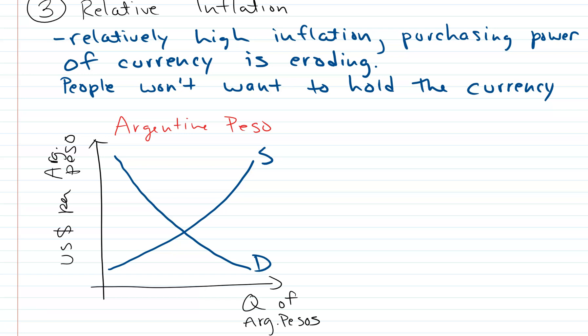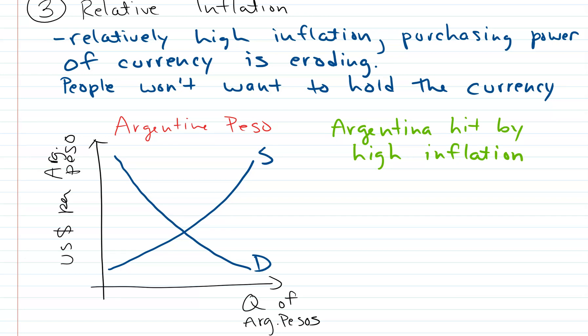We have people who want to buy Argentine pesos with dollars — that's the demand — and people who want to sell pesos to get dollars — that's the supply. Now let's suppose Argentina is hit by high inflation.